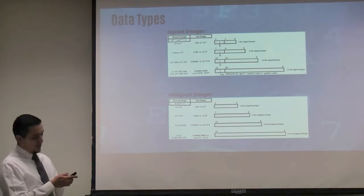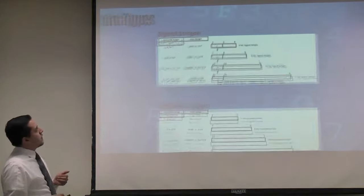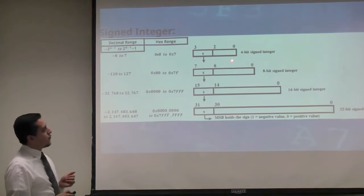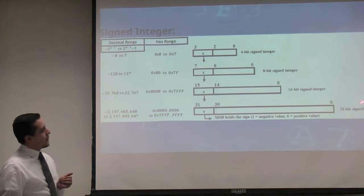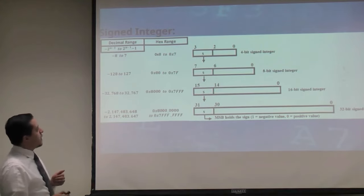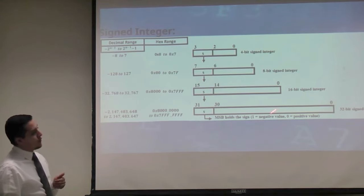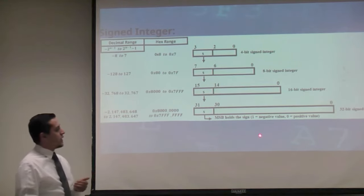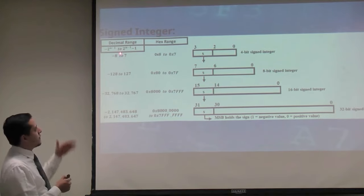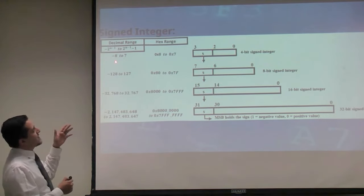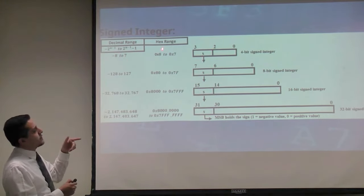The data types: we have signed for the different sizes — 4, 8, 16, and 32. The MSB holds the sign, where if it's a 1 it's negative and 0 is positive. Here we have the different ranges in decimal and hexadecimal.